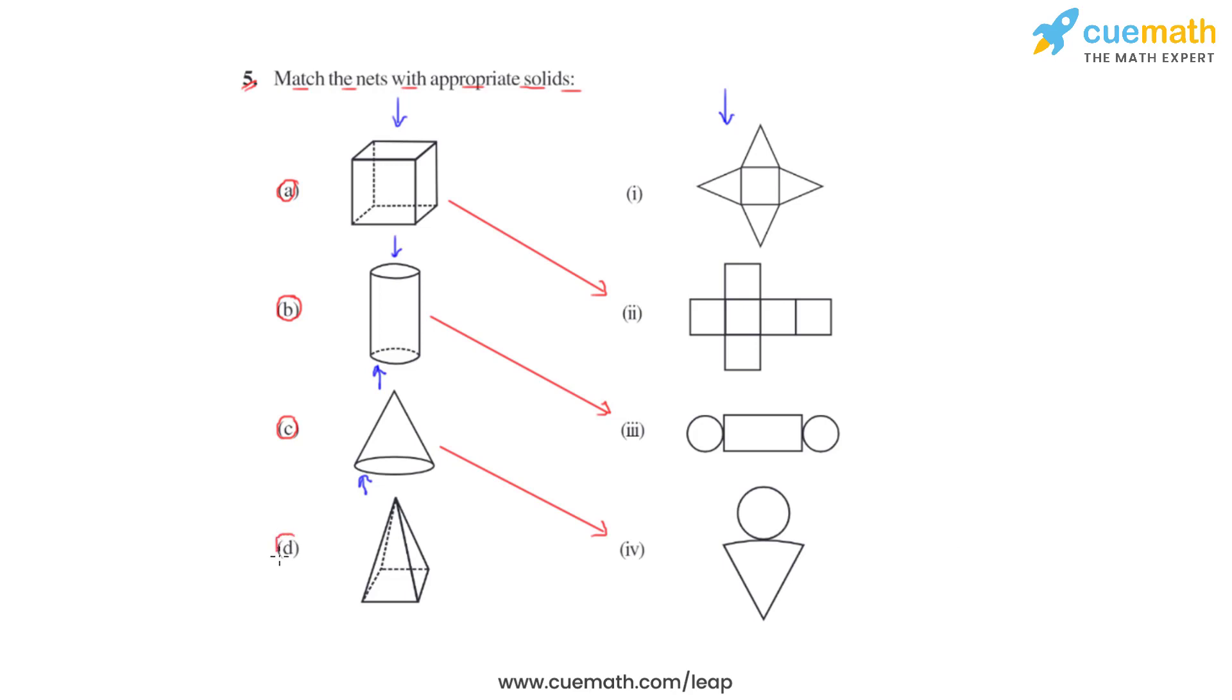Moving on to the last figure of the set which is a pyramid. In this case we are just left with one of the options which consists of one square and four triangles and even this solid consists of four triangles at its faces. These are the faces which we can see and at the base it consists of a square which is there in the net present in the first option.